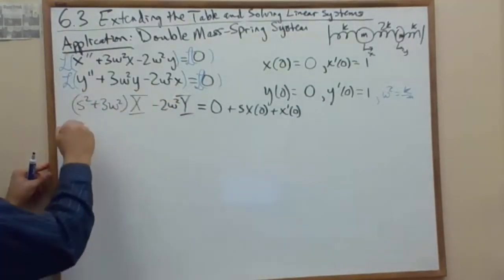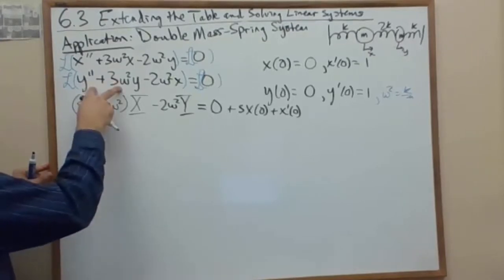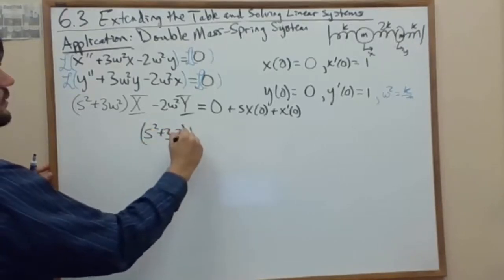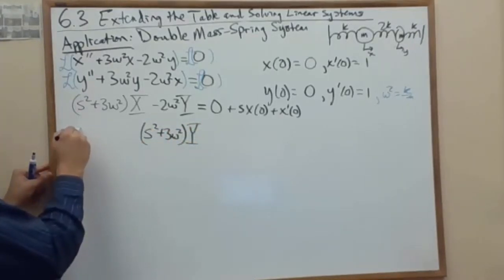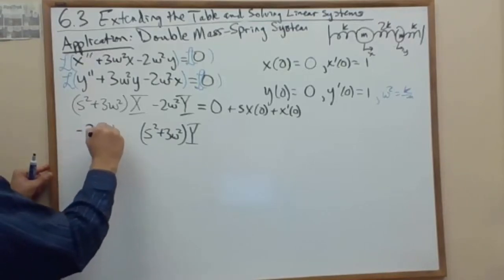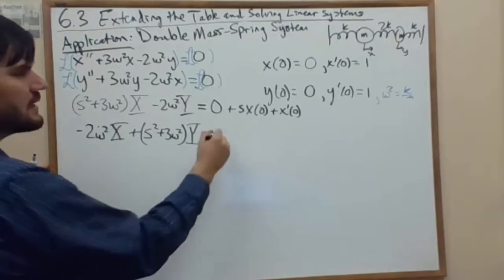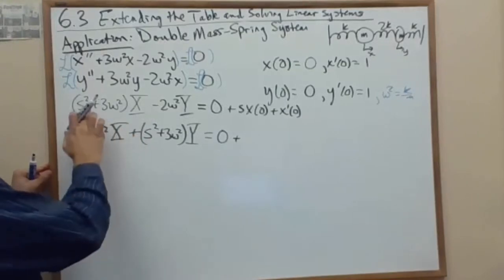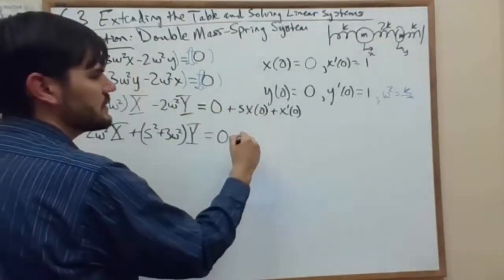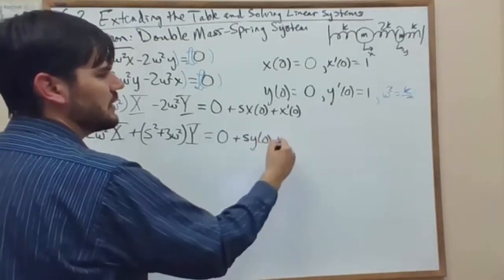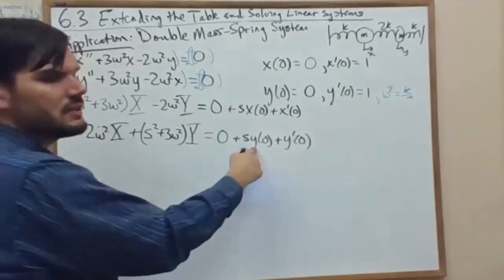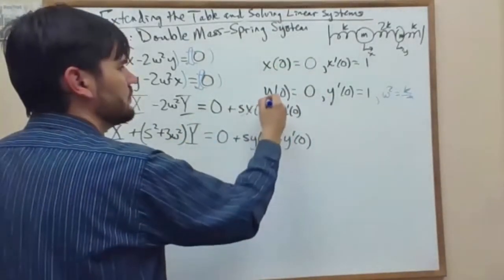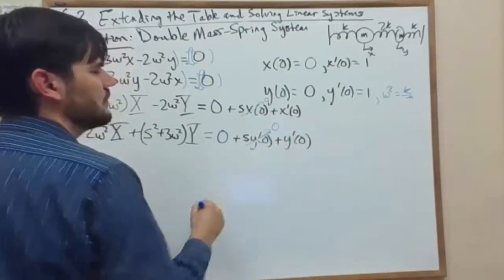On the second equation, I will have my y's expanded as s squared plus 3 omega squared Y, and then my x component has a minus 2 omega squared X. On the right-hand side I transform 0 to 0, and then I add the initial conditions for y. So off of y double prime, I get first s times y of 0, and then plus y prime of 0. So first initial position, then initial velocity. Well, initial positions are both 0, so that's nice.